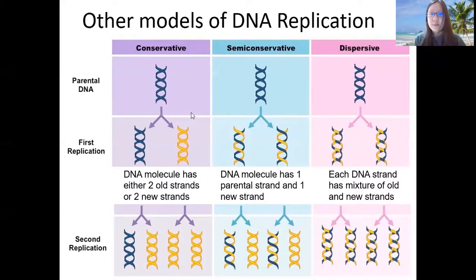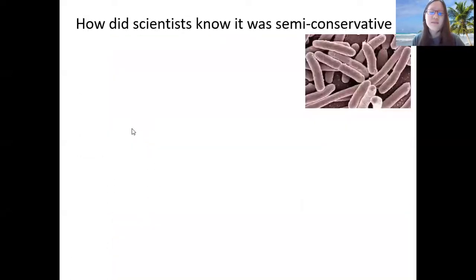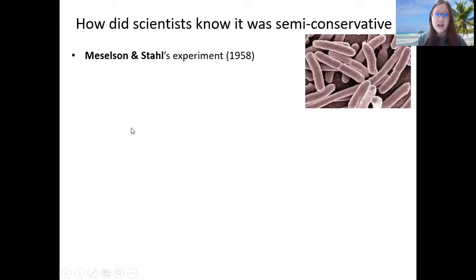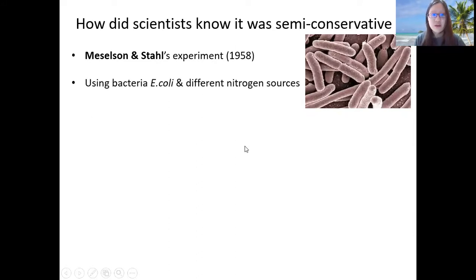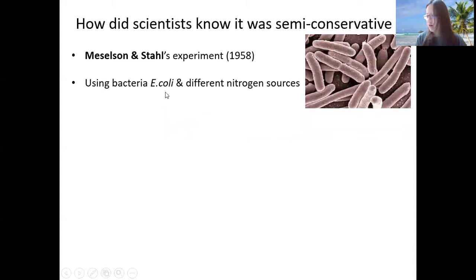Now, of course, we know that dispersive and conservative are not true. But how did they figure it out in the first place? These two smart fellows, Meselson and Stahl, actually came up with this elegant experiment in order to prove that DNA replication is indeed semi-conservative. So what did they do? They used E. coli and different nitrogen sources.